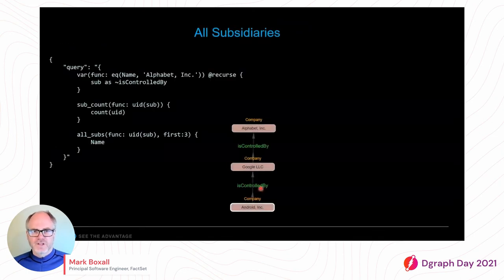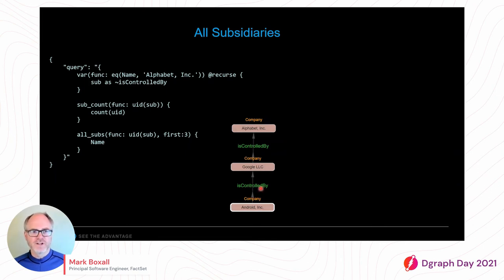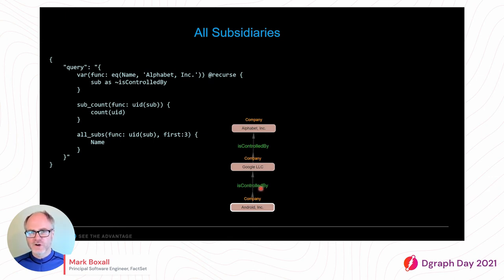The next sequence of slides will look at some actual queries. I want to mention that the query language we expose on our API is really just DQL, but with a couple of additional helper functions and directives that we've added to make querying a little bit easier, especially when it comes to point-in-time querying.